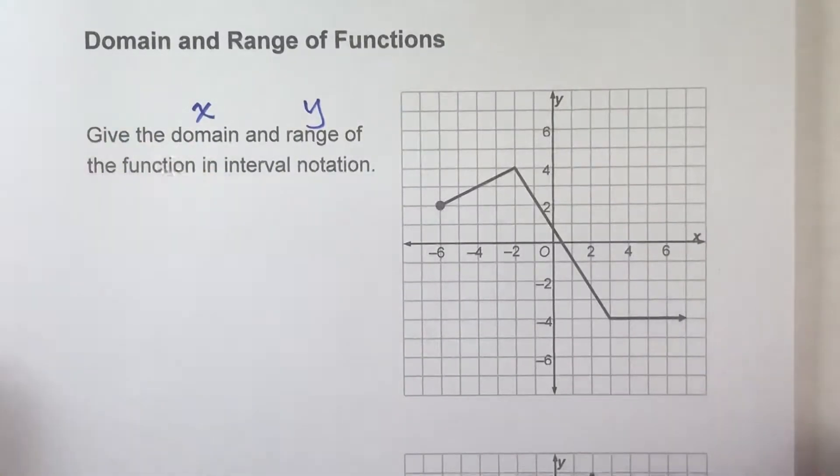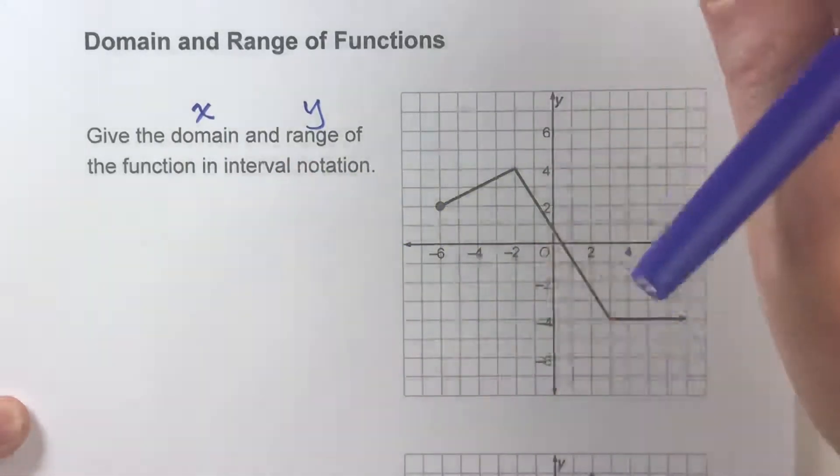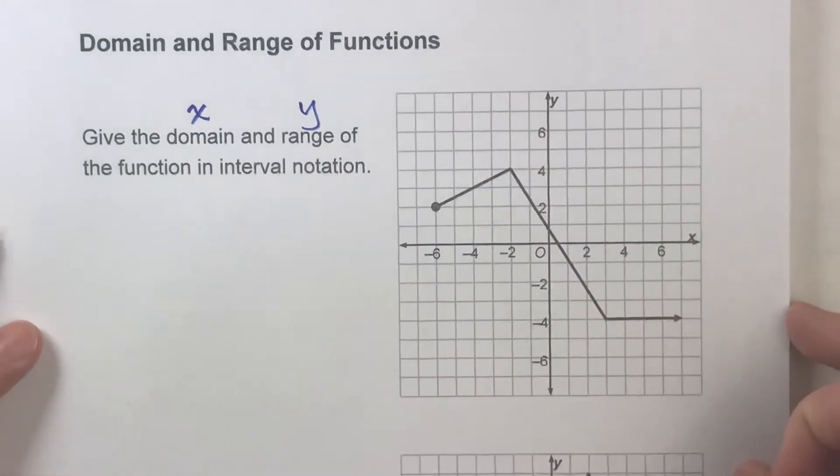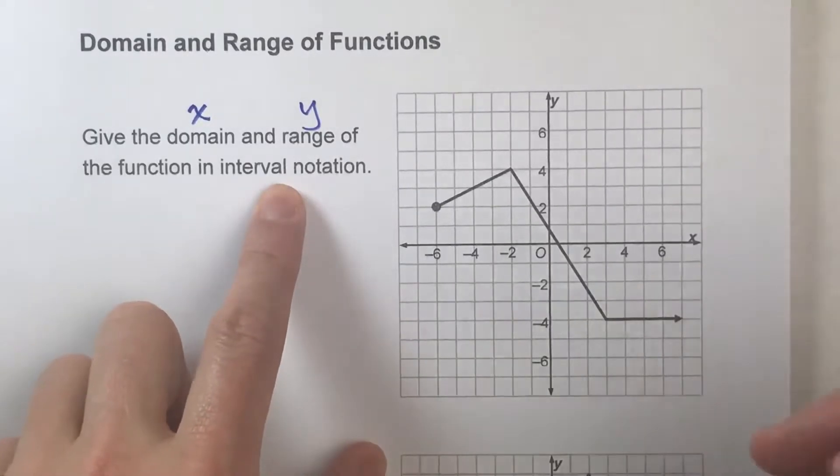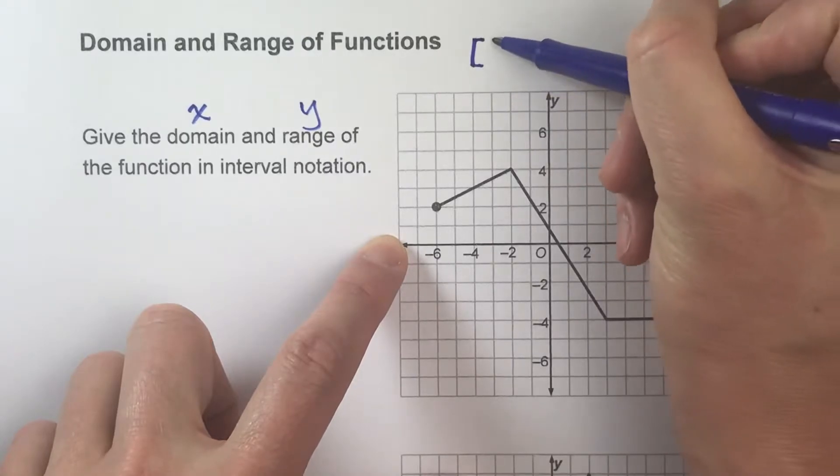When we're looking for the domain, we're just focusing on the side to side. When we're focusing on the range, we're focusing on the up and down. Now, the other thing we have to think about for interval notation is whether x and y values can be the number.